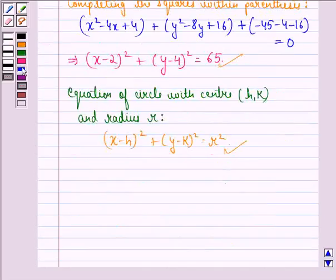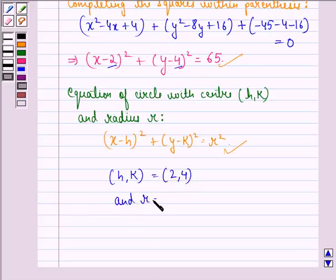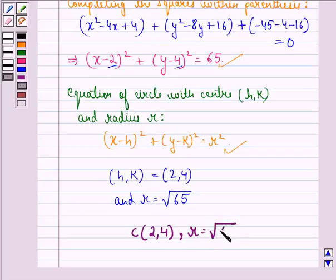We can say that the point (h, k) is same as (2, 4) and the radius r will be equal to the square root of 65. So our answer to this question is center is (2, 4) and radius r is equal to root 65.